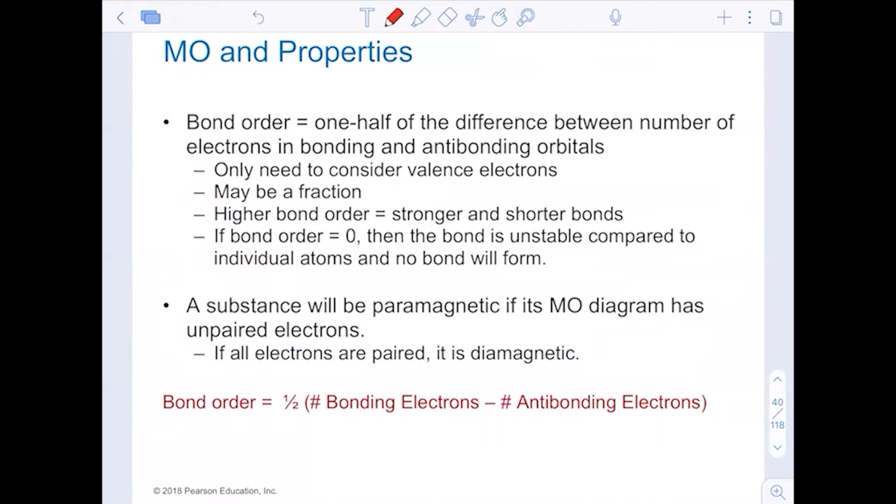What we want to be able to talk about here is bond order. Bond order is calculated here. One half of the number of bonding electrons minus the anti-bonding electrons. If we have a bond order of zero, the bond will not form. The molecule is going to stay as individual atoms not ever form a molecule. If we have a bond order of one or greater, even plus one half, anything greater than zero, we will have an actual molecule be able to form.